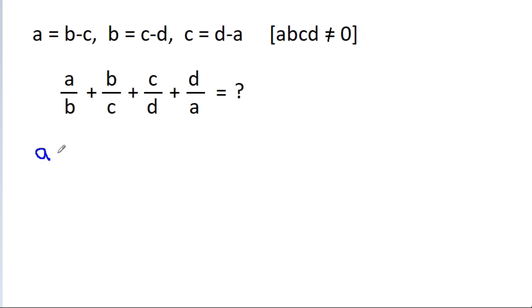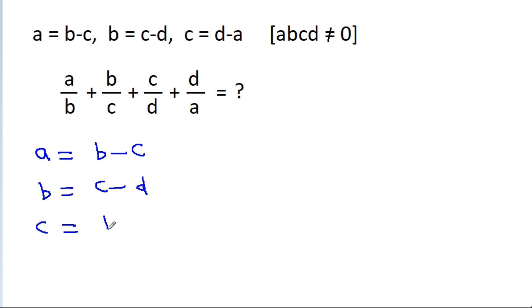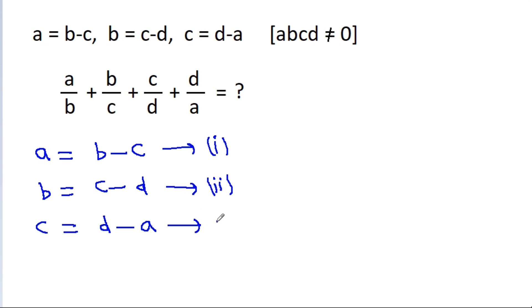We have given that a is equal to b minus c — suppose this is equation 1; b is equal to c minus d — this is equation 2; and c is equal to d minus a — this is equation 3.